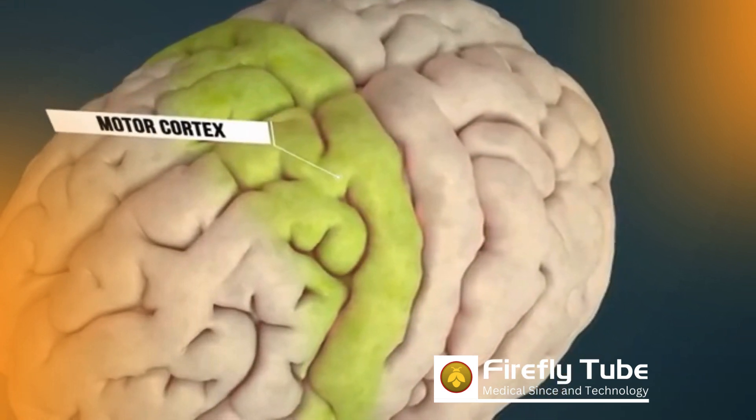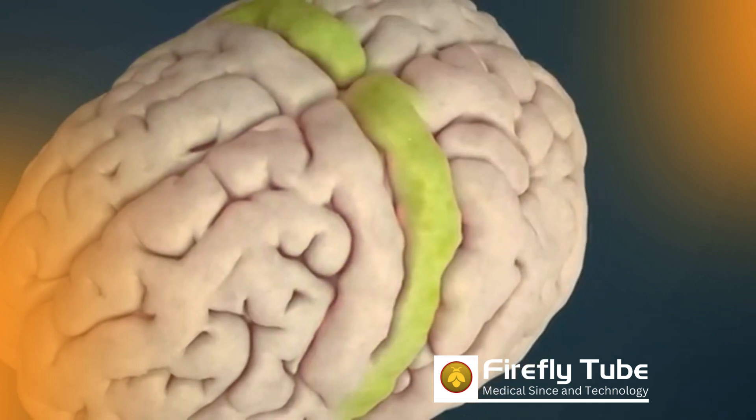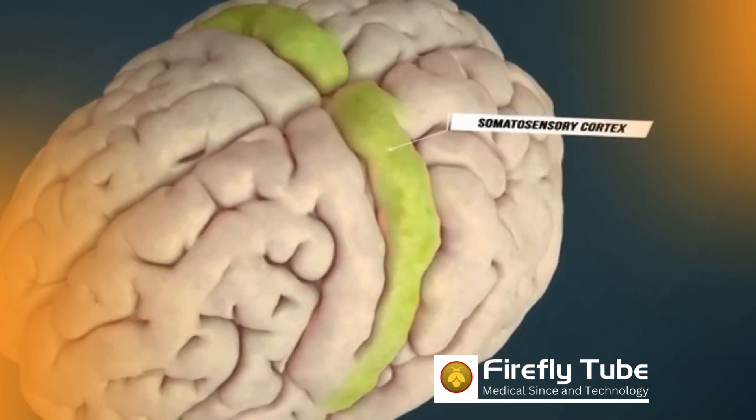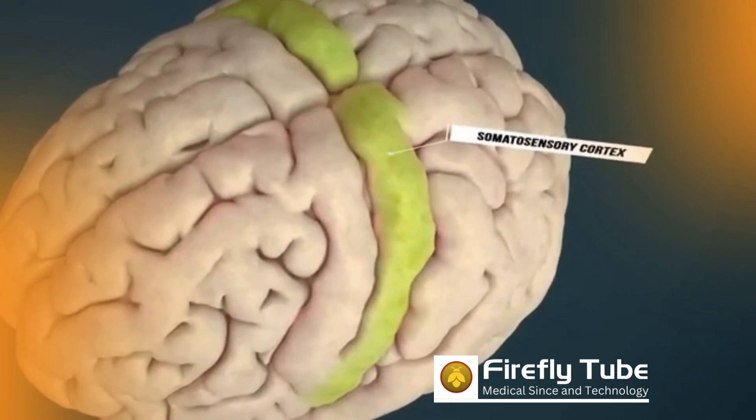With the help of the directly adjacent somatosensory cortex, which processes information from receptors on the skin, for example, we are able to generate complex movement sequences.